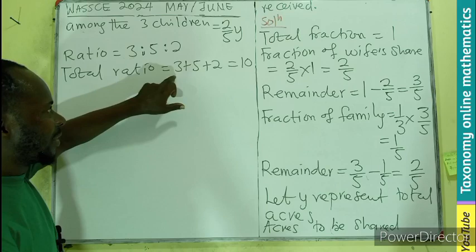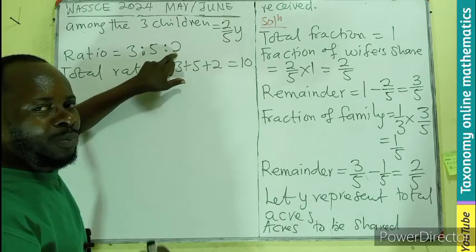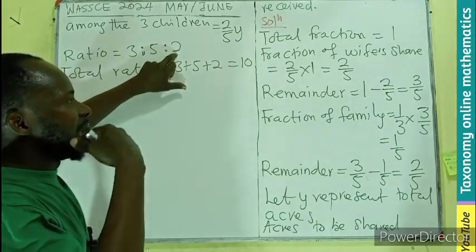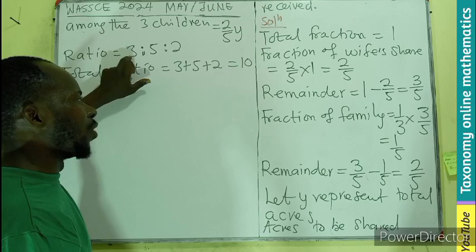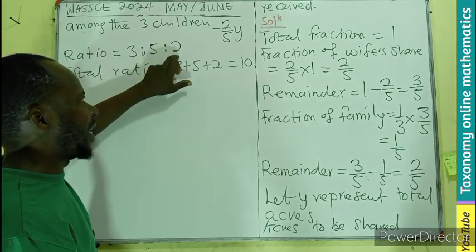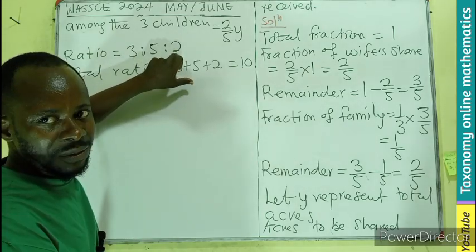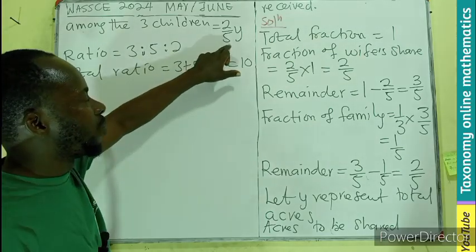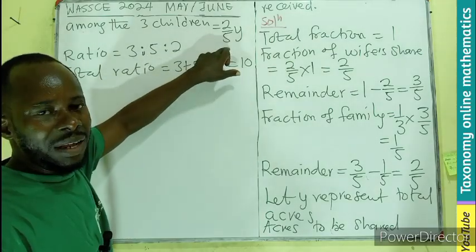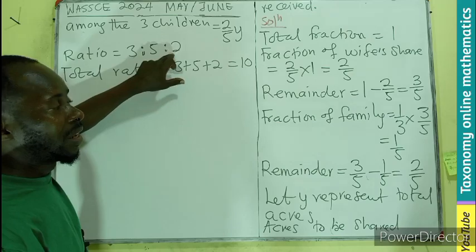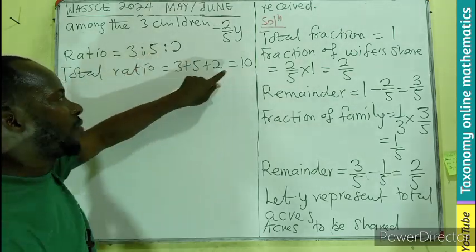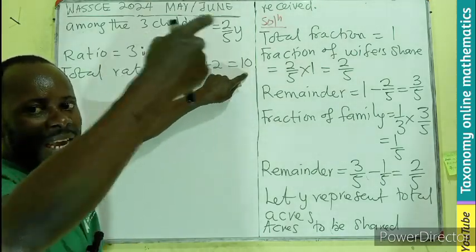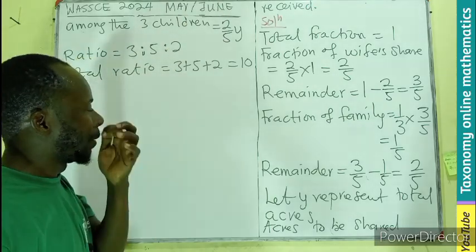So the least among them will be corresponding to two. The greatest will be five. Then the middle will be this. So if this person is taking eight acres, if this person is taking eight acres, then this is going to be the total. He's taking eight, the two out of the ten is going to be found out of this.